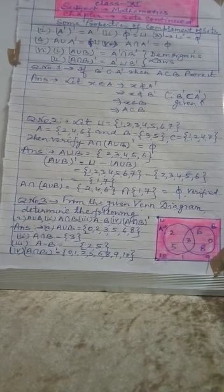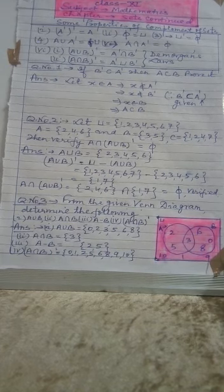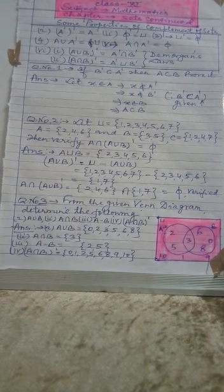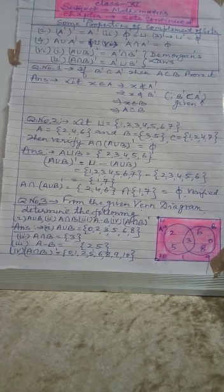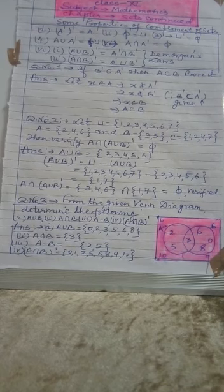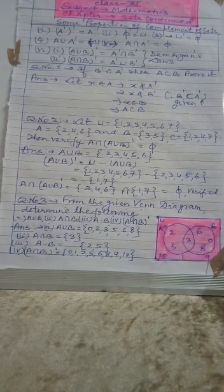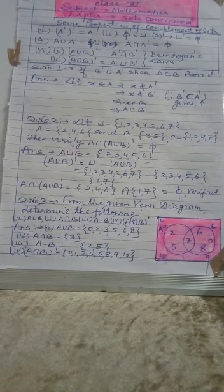Then question number three is: from the given Venn diagram as it is highlighted, I have written here, determine the following. First, A union B. Second A intersection B. Third A minus B. Fourth A intersection B complement.